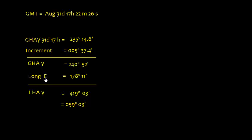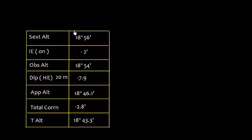Now again, the same principle: longitude east, GHA least, so LHA will be more. So I've got to add. When I add both these, I get this value 419° 03'. However, this is more than 360°, so what I need to do is subtract 360°, and I get this value 059° 03'.